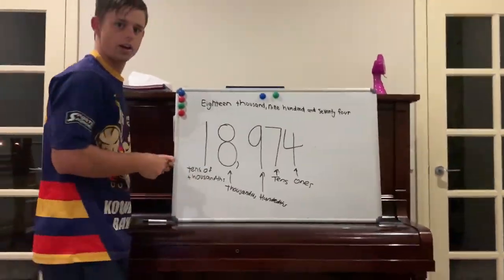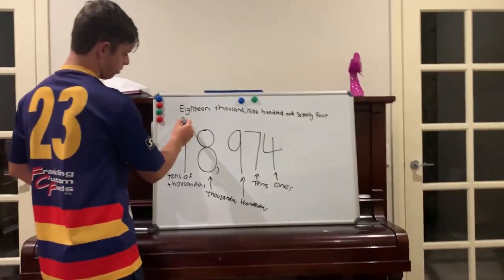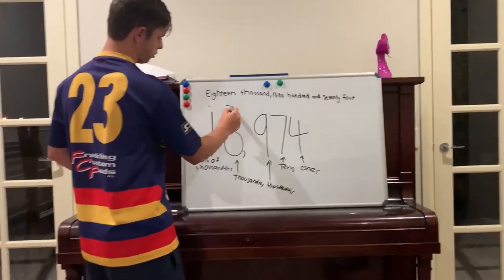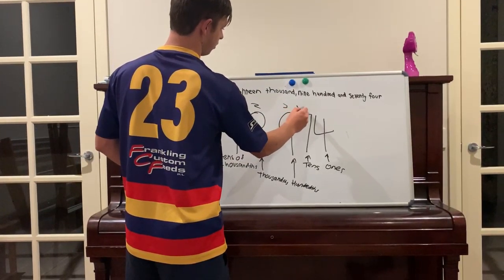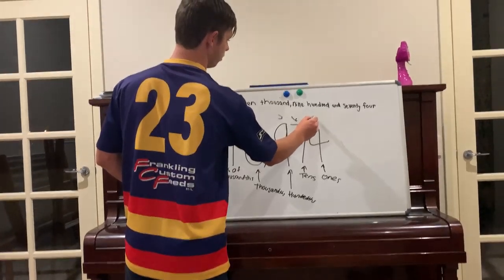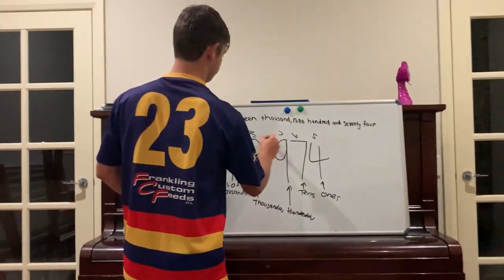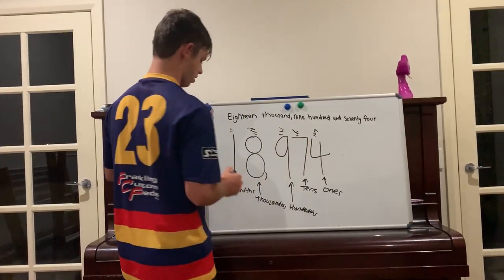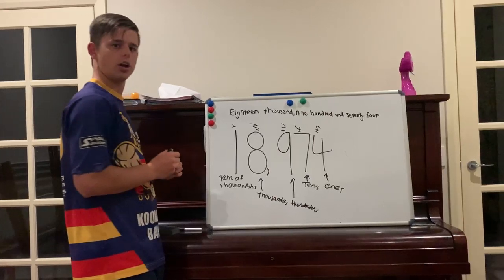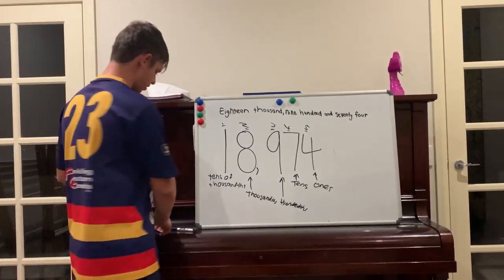As you guys can see, it's 1, 2, 3, 4, 5 digits long. So that's how we know it's a number in the 10s of 1,000s.